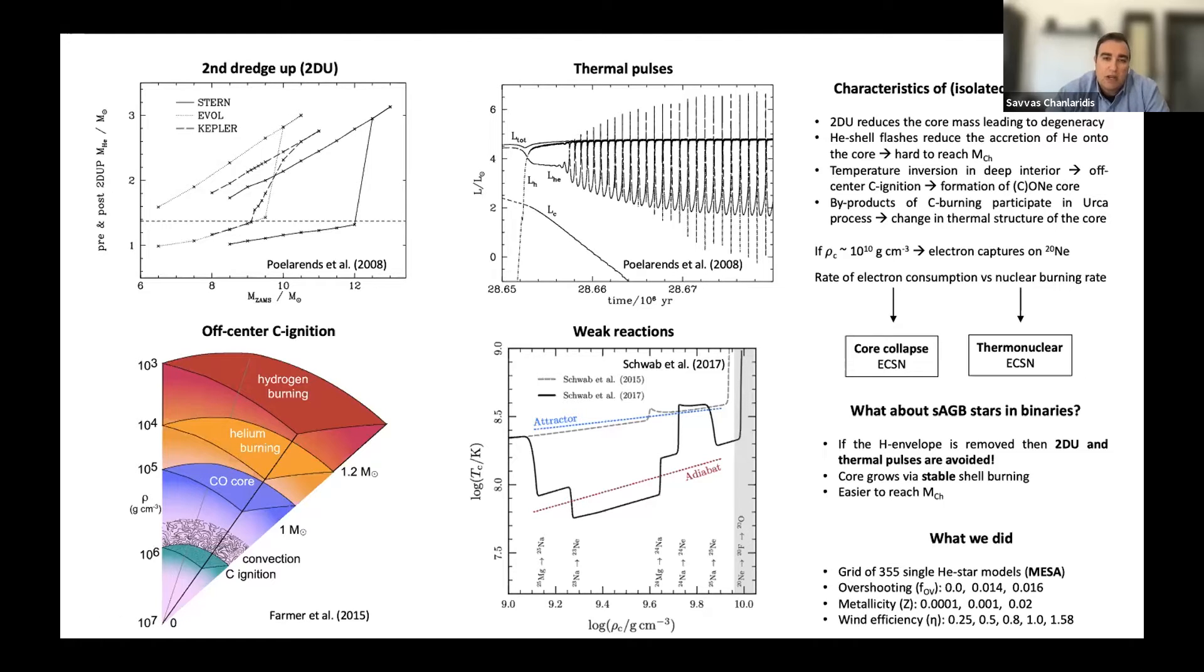And the urca process, under the right conditions, can act as a local cooling agent and significantly alter the thermal structure of the core, as you see here on the bottom right. This is basically a plot that shows the evolution of the core in terms of the central density on the x-axis and central temperature on the y-axis.